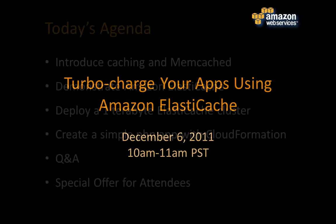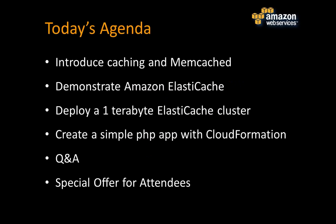Thanks, Pavan. Hi everybody, thanks for coming. Today I'm going to provide an introduction to caching and a very popular open source library, Memcached, which is used by many of the world's top websites. Then I'll tell you about Amazon ElastiCache and give you a demonstration of how to create a cache cluster using the ElastiCache console. We'll explore how to create a sample app using Amazon CloudFormation templates, which automate the creation and deployment of AWS resources. We'll then have time for Q&A. For everyone attending today, we will offer a two-month trial of ElastiCache and give you details at the end of the session.